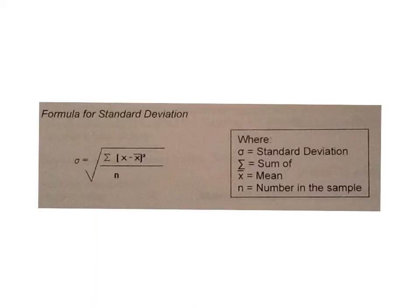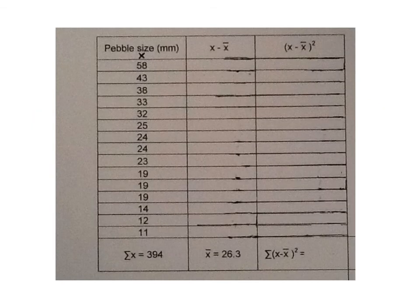So here is the formula for standard deviation which we will use to calculate for the north end and then the south end. So we start by using a table with three columns. In the first column the pebble size for the north end of the beach in rank order from 58 maximum to 11 minimum. We add it up at the bottom, 394, and we call this column x.